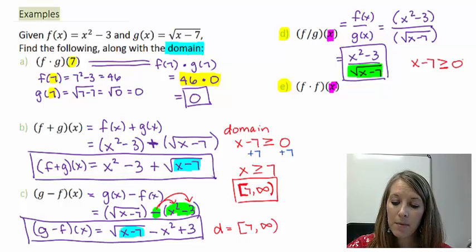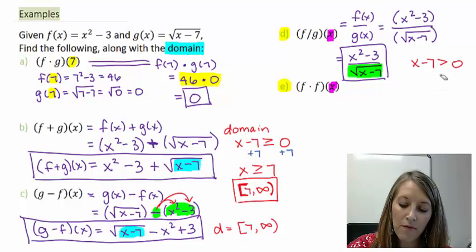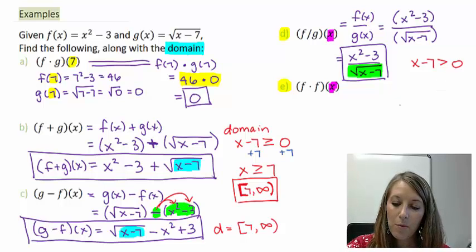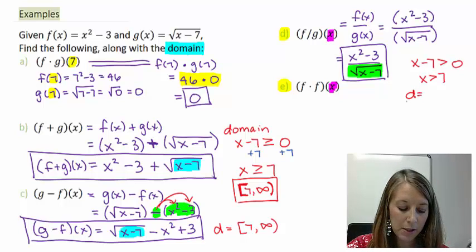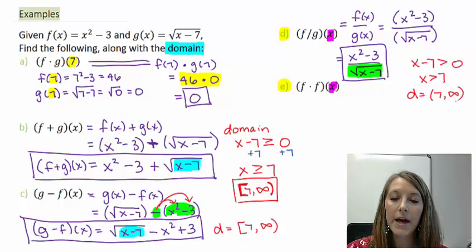So typically for our domain under the square root, we would take this x minus 7 and set it larger than or equal to 0. But since it's in the denominator, I know that it cannot be equal to. So I need to get rid of that part. If I move my 7 to the other side, that gives me x is larger than 7. So my domain is strictly larger than 7, not including it.